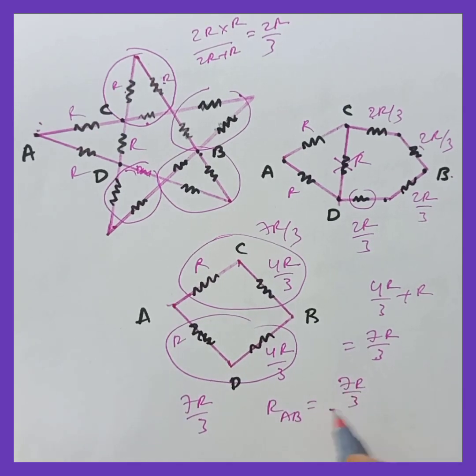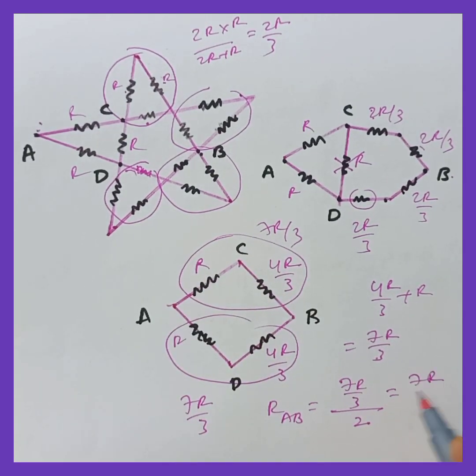Therefore we can take 7R by 3 whole divided by 2. Because when 2 are the same then the result will be half of them. So we can write the answer as 7R by 6.